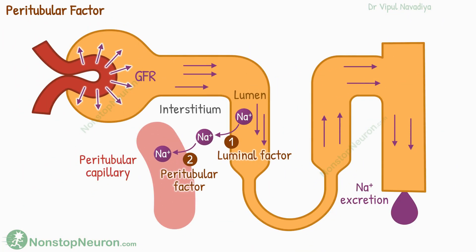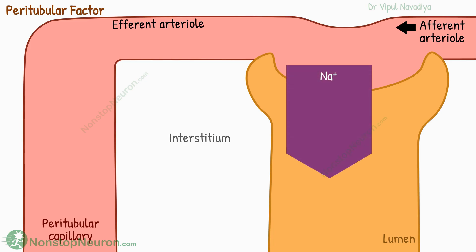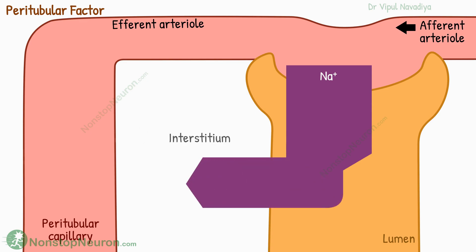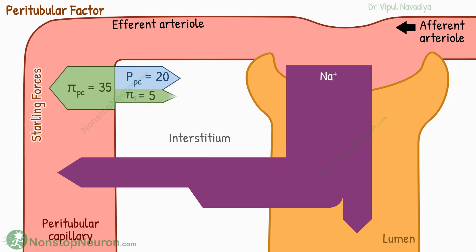Now let's talk about the peritubular factor — an increase in uptake from the interstitium into the peritubular capillary. First, sodium is filtered at the glomerulus; some moves from the lumen into the interstitium and the remaining moves ahead in the tubule. From the interstitium, some sodium enters the peritubular capillary. This movement is driven by Starling forces: colloid osmotic pressure and hydrostatic pressure in the capillary, and colloid osmotic pressure and hydrostatic pressure in the interstitium. Normally a net driving force of about 20 mmHg causes this reabsorption.